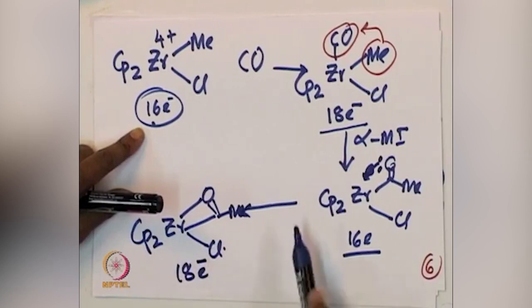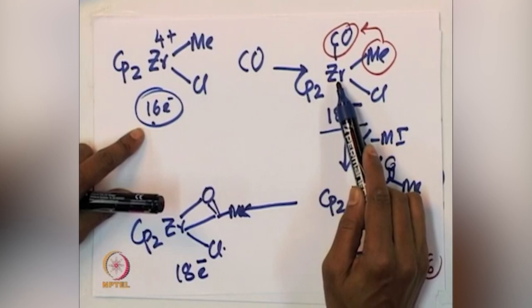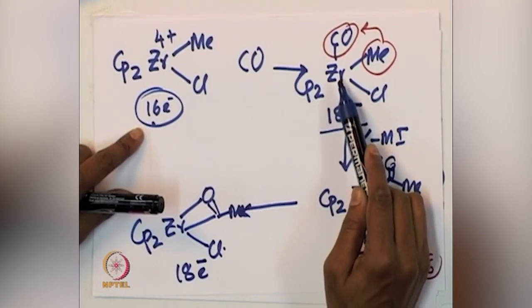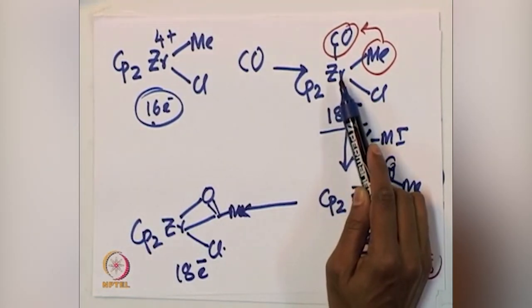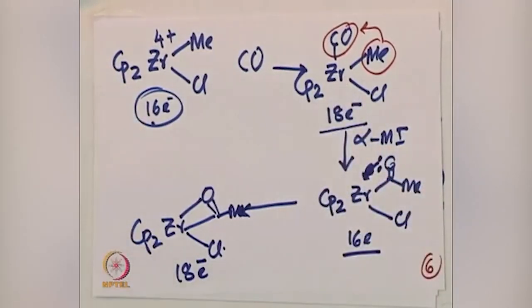For D0 metal centers, CO complexes are essentially unstable due to the absence of π-backbonding — there are almost no crystallographically characterized examples of D0 metal-CO complexes. Even without a methyl group, stabilizing a D0 metal center with CO bound to it is extremely difficult and getting a crystal structure would be next to impossible. Stabilizing such a species remains an interesting open research problem.